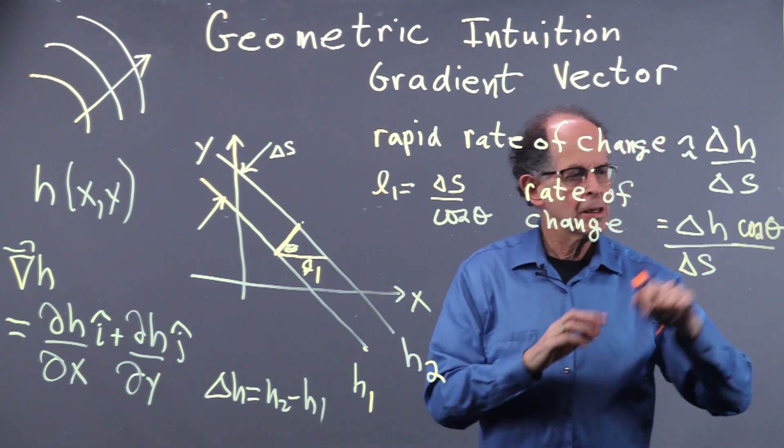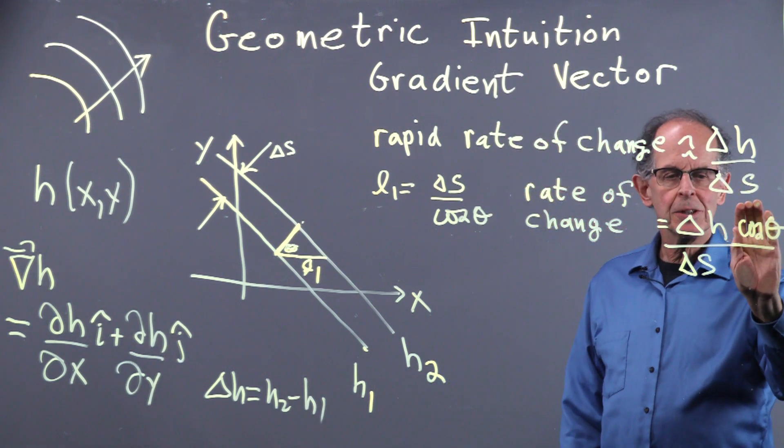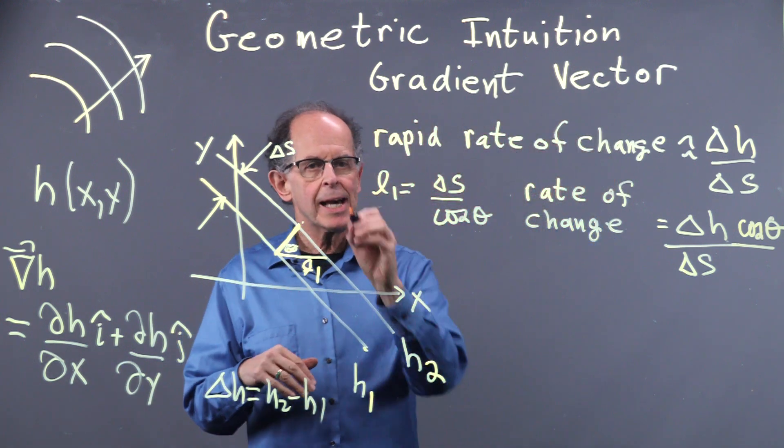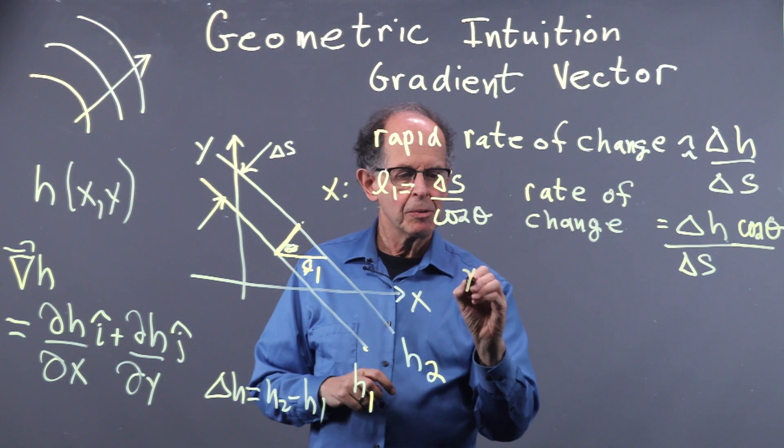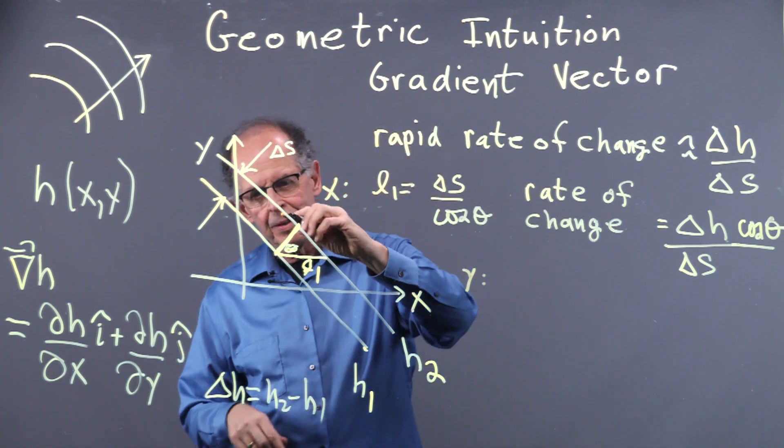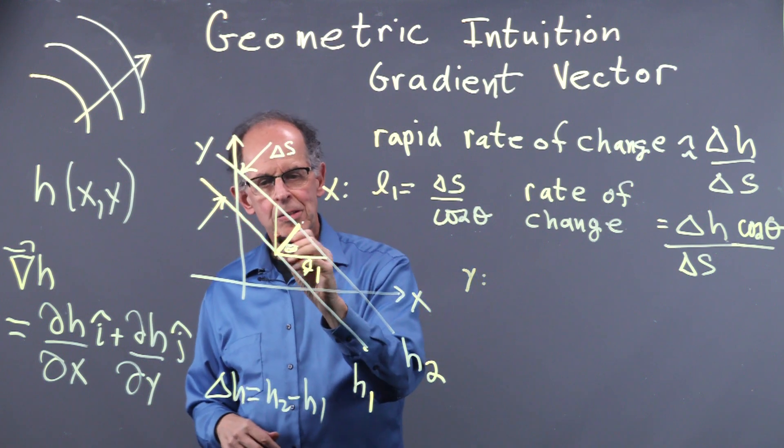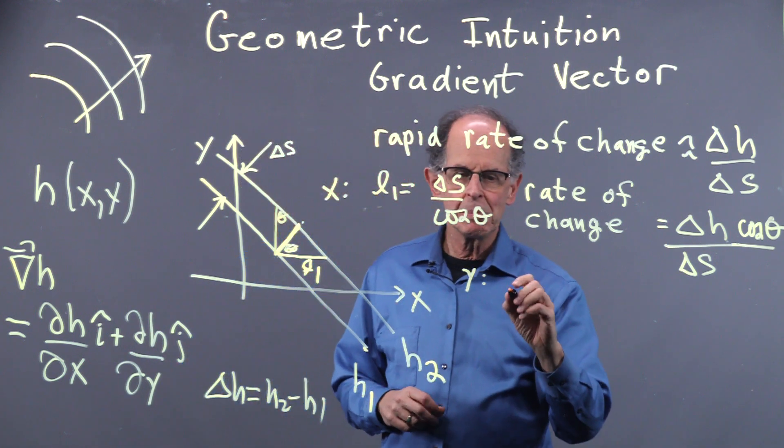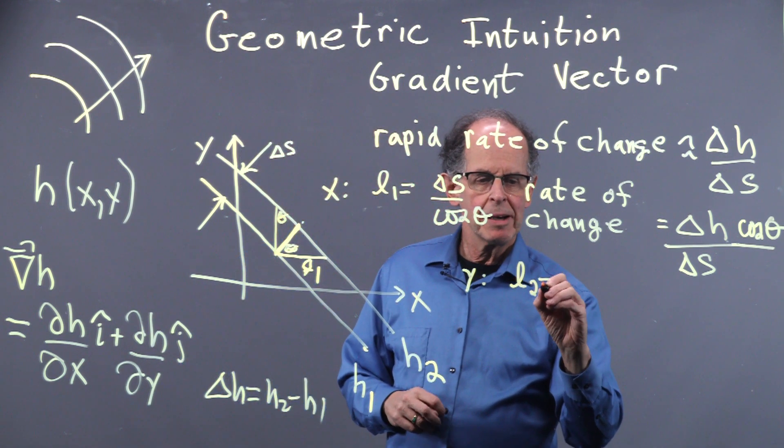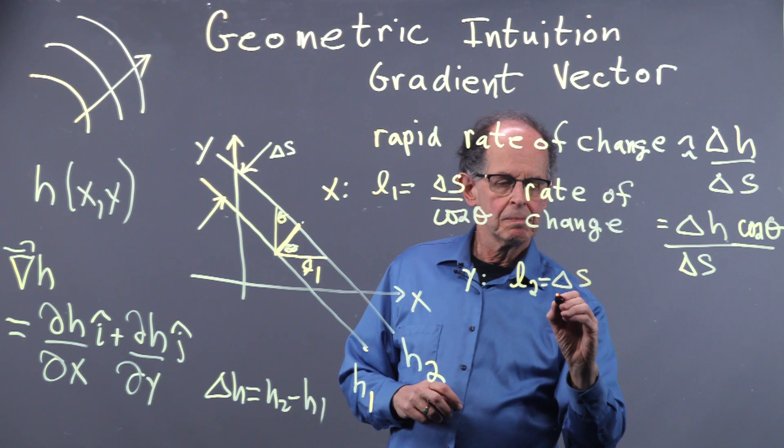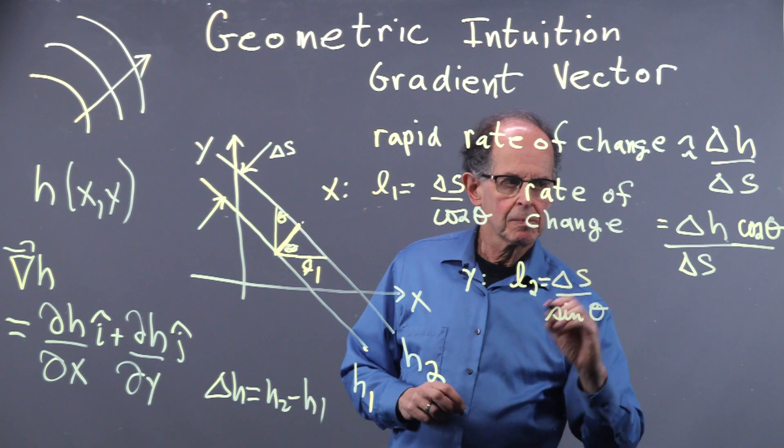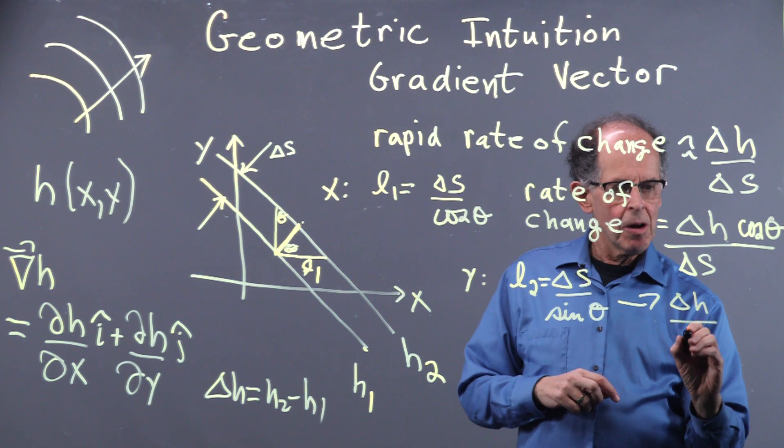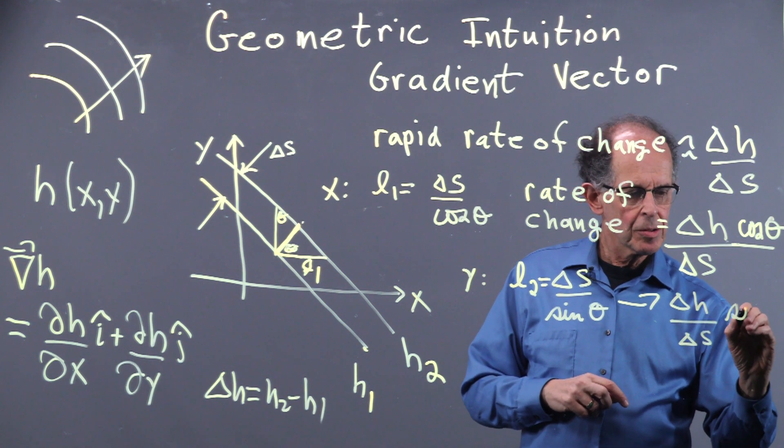And that makes sense because that's the most rapid rate of change. And now that's less in X. And in Y, what is it going to be? It's going to be going the other way here. Well, this is a right angle triangle. So this angle here is also theta. So now, instead of dividing by cosine, we'll have sine. And so the rate of change in this one is going to be delta H over delta S times sine of theta.